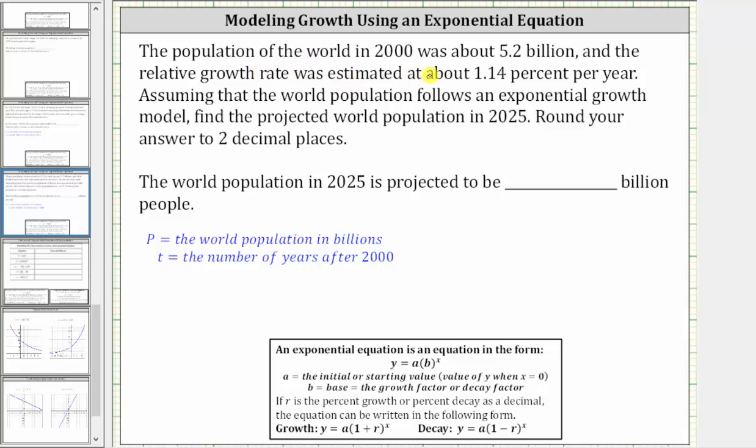The population of the world in 2000 was about 5.2 billion, and the relative growth rate was estimated at about 1.14% per year. Assuming that the world population follows an exponential growth model, find the projected world population in 2025, round your answer to two decimal places.